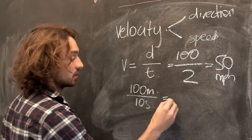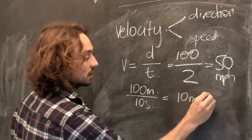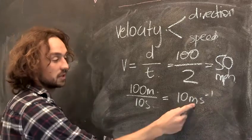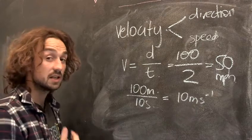then your speed, or your velocity, is ten meters per second. And that's how we write meters per second. Meters per second. S to the minus one. That's how to calculate velocity easily.